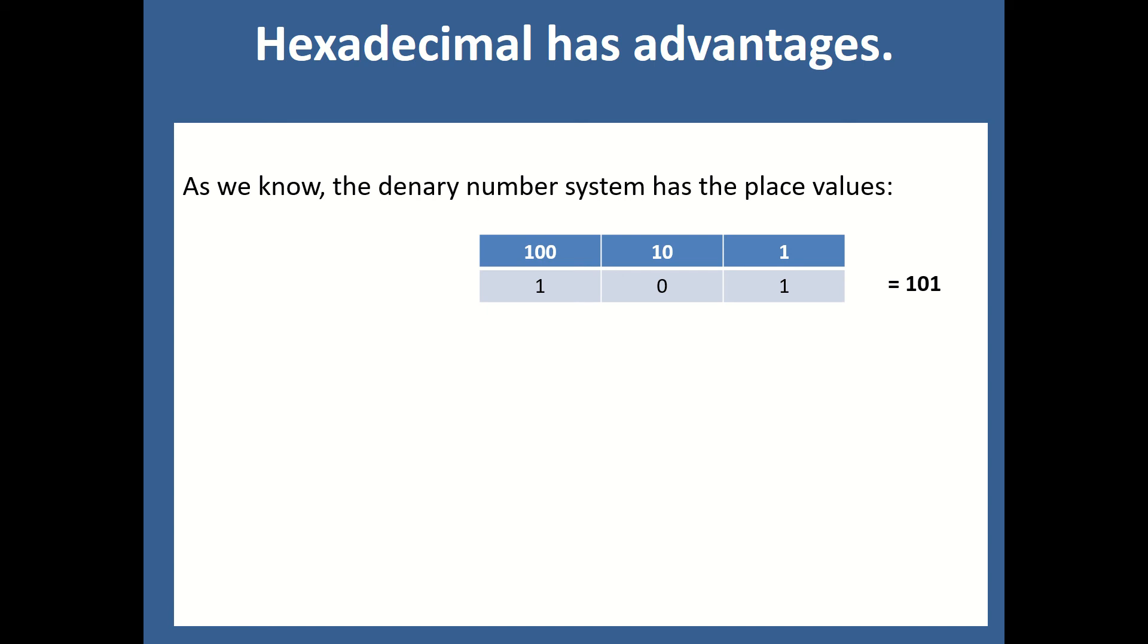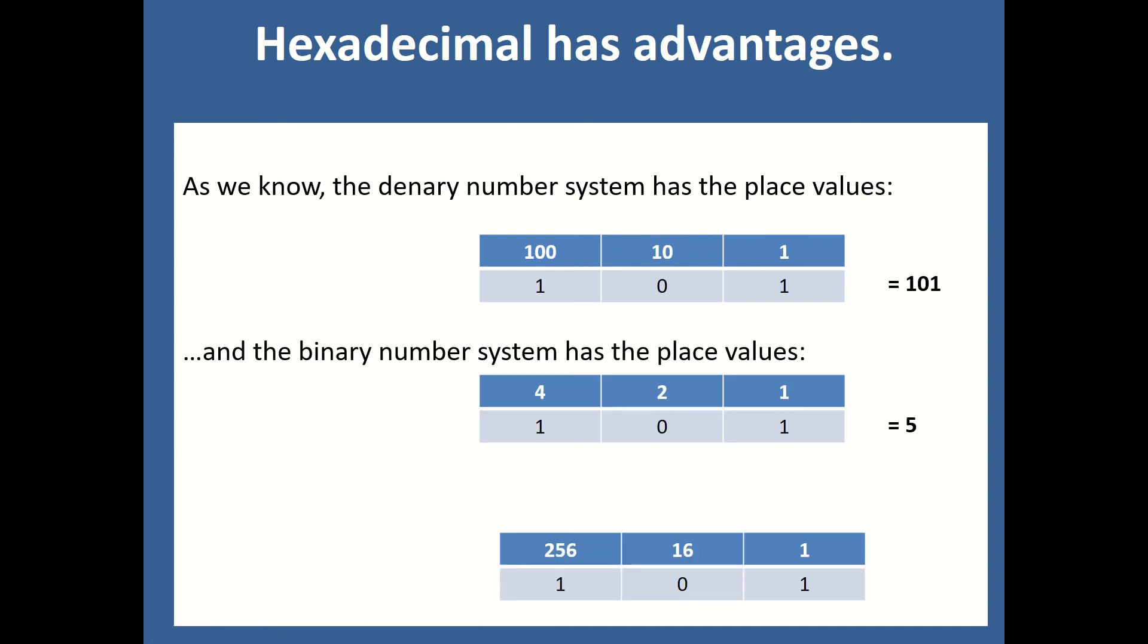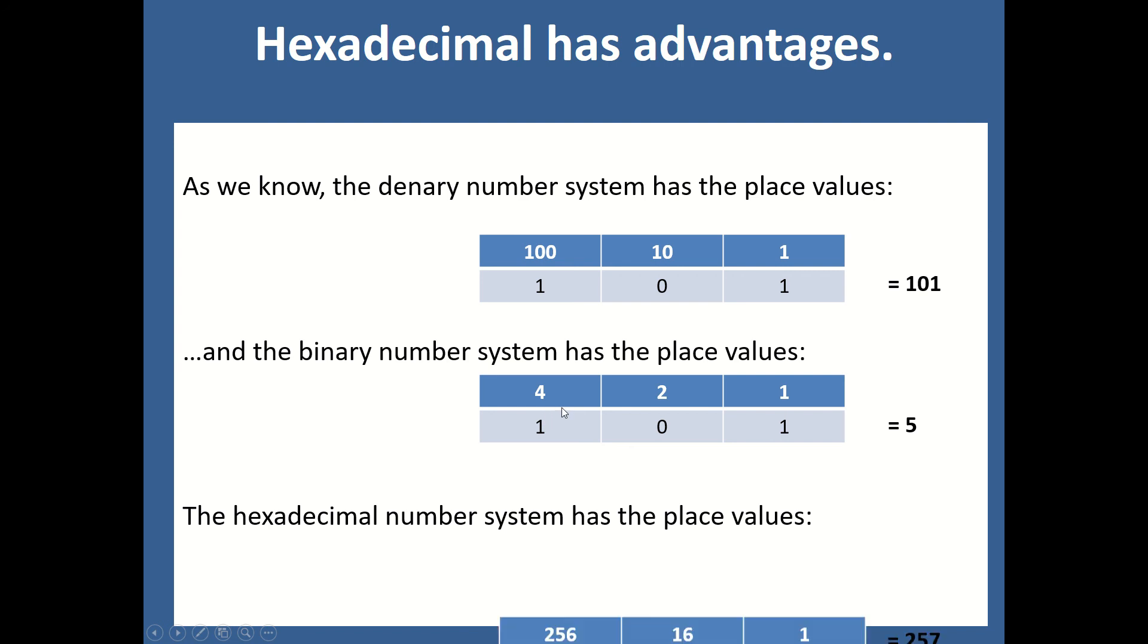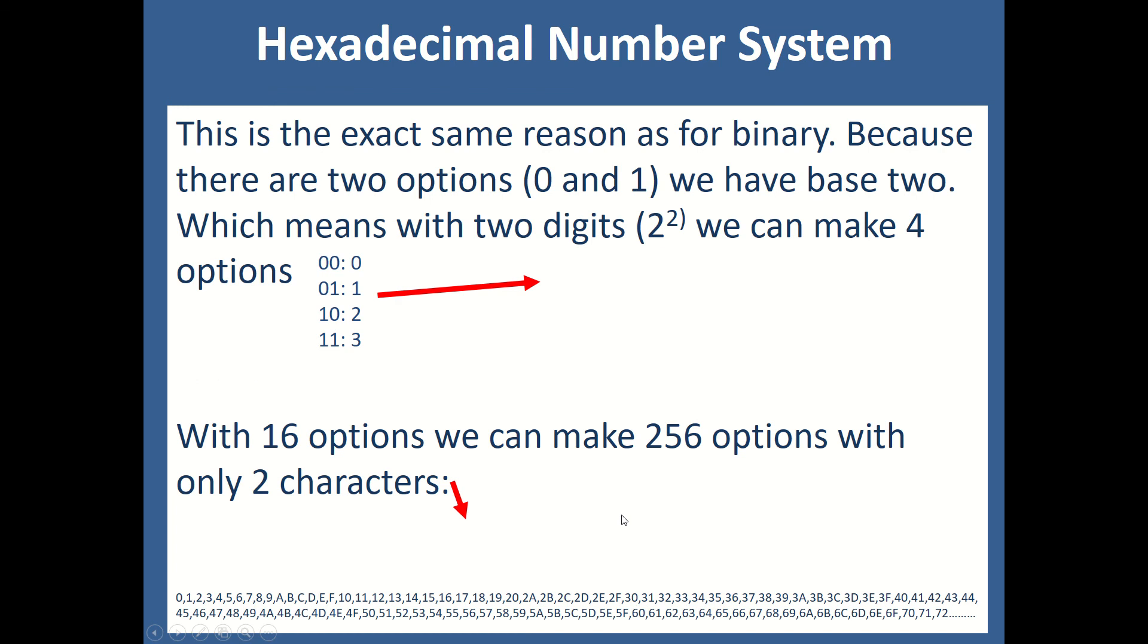Now, there are reasons why we use hexadecimal. The reasons are that, first of all, we know that when we use denary, we use hundreds, tens, thousands, etc. We know in binary, we use 1, 2, 4, 8, 16. What if we have three bits, three binary digits? Actually, if you look at this value here, for example, 101 would be 101. Well, the biggest number we could make would be 999. The biggest value we could make with three in binary would be 7. Whereas in hexadecimal, because our place values are much bigger, we can make much bigger numbers.